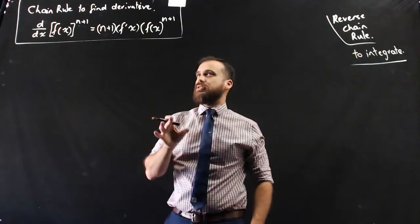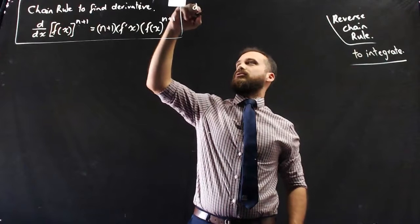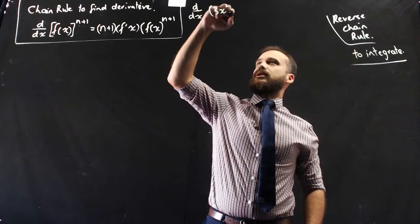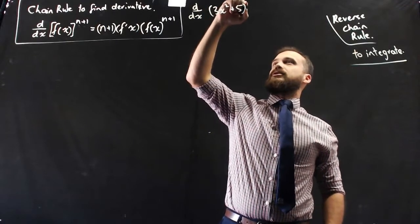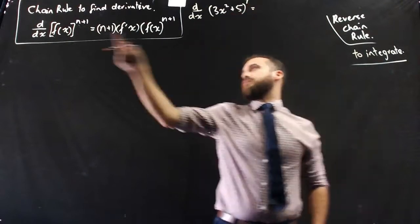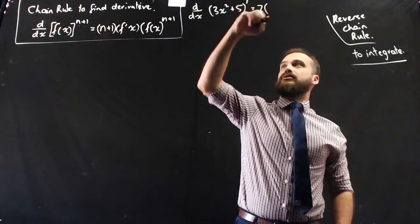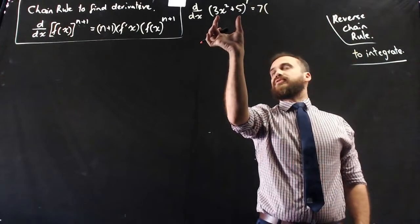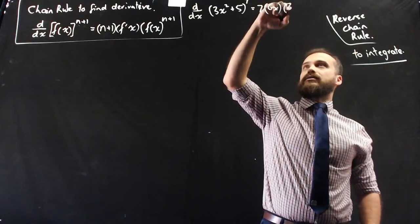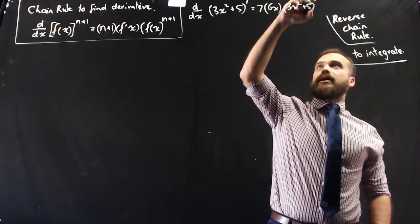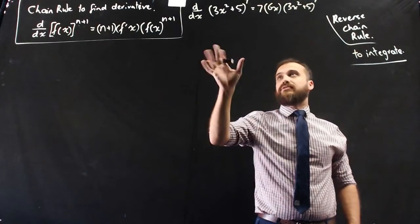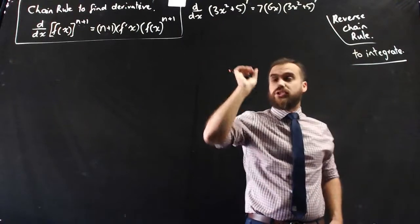And you've definitely done this before with a question like the derivative of 3x squared plus 5 to the power of 7. Now, the answer to that is going to be 7 times the derivative of this, 6x times all of that to the power of 7. And you can muck around with that and factorize it and expand it and do whatever you want, but that's how you find the derivative using the chain rule.